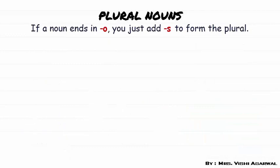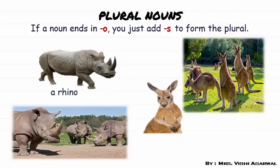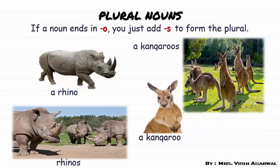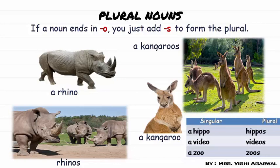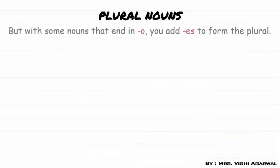Now if a noun ends in O, then we have to add only S to form the plural. For example: a rhino becomes rhinos, a kangaroo becomes kangaroos, a video becomes videos, a hippo becomes hippos, a zoo becomes zoos.